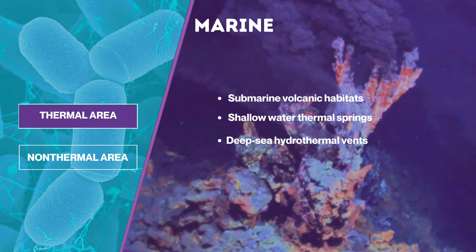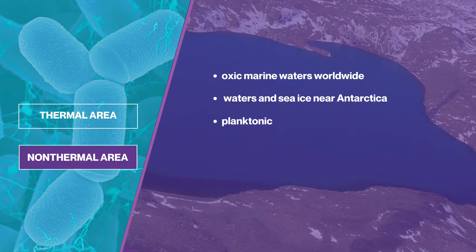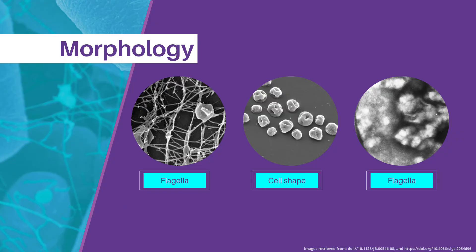The home to the most thermophilic of all-known archaea are submarine volcanic habitats, including both shallow-water thermal springs and deep-sea hydrothermal vents, which is the hottest habitat known to yield prokaryotes. Non-thermophilic Crenarchaeotes have been detected in oceanic marine waters worldwide, thriving even in waters and sea ice near Antarctica. These organisms are planktonic and present in significant numbers in waters that are both nutrient-poor and very cold. Many microbes contain flagella for motility. The image shows Pyrodictium — disc-shaped cells connected by a network of fibers, which may help to attach to sulfur granules.